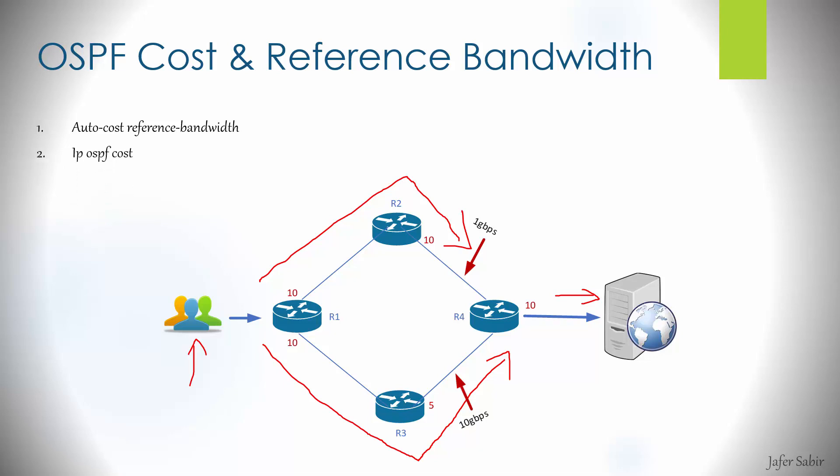We can also configure costs manually using the IP OSPF cost command and specifying the cost of the interface. There's a third way too: you can manipulate the bandwidth of the interface directly, which will change the cost using the bandwidth command. However, you've got to bear in mind this may impact cost configuration if you've got cost set on routers, and it can affect monitoring systems reliant on bandwidth being set to true values. It doesn't feel like best practice to change the bandwidth if it's not the true value, so I'd leave the bandwidth alone and stick with the IP OSPF cost command, or even better, the auto cost reference bandwidth command to let OSPF work out costs automatically.